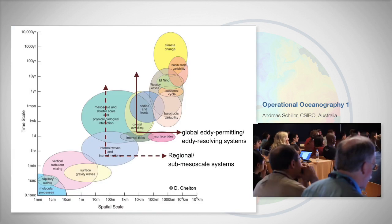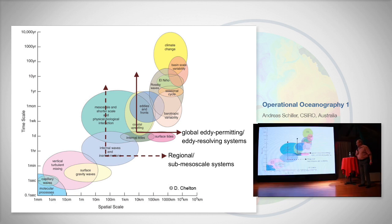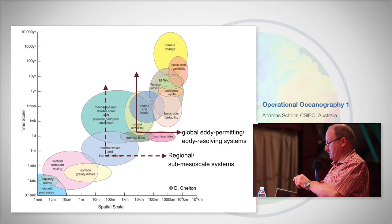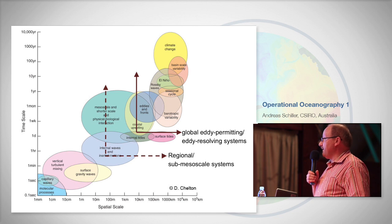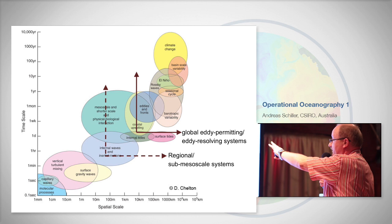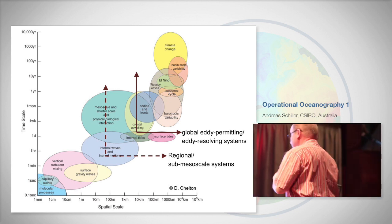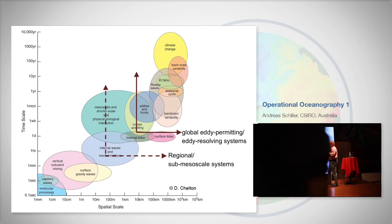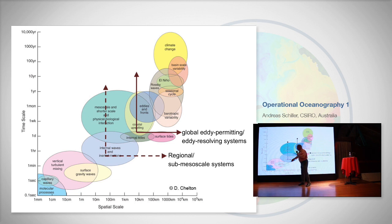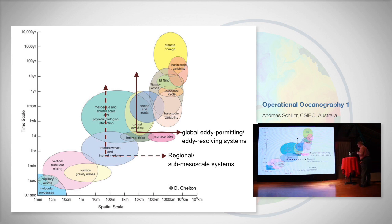This is a very famous picture — a slightly different version of Dudley Shelton's famous scales, spatial and temporal scales. At the very top end you have the climate change time scale, and you can see clearly that eddy-resolving scales require much higher resolution and also much higher temporal resolution as we go down the scales. The molecular processes discussed earlier are well beyond the scope of current forecasting systems.